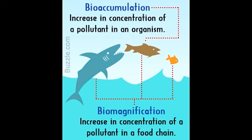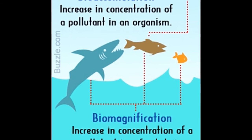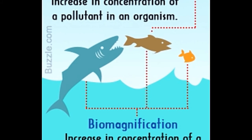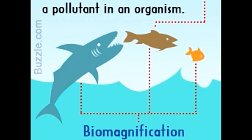Both bioaccumulation and biomagnification trace a movement of pollutants through the various trophic levels in an ecosystem — in food chains and food webs, to be precise. In a food chain, energy transfer takes place when a particular organism feeds on the organism at the subsequent trophic level. However, it's not just the energy that is transferred in this process — even the pollutants ingested by organisms at the subsequent trophic level are transferred.